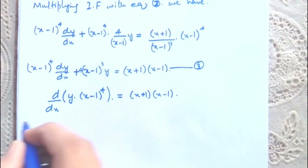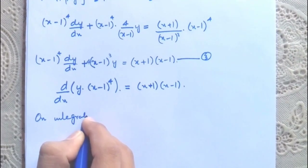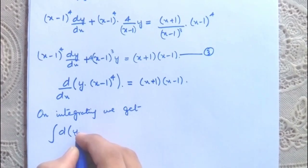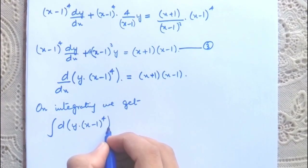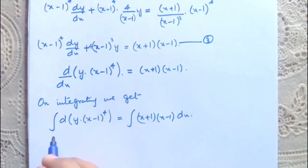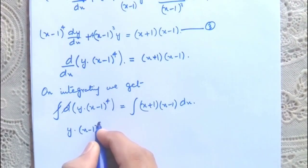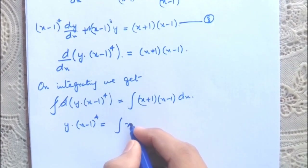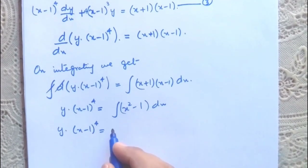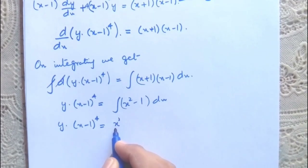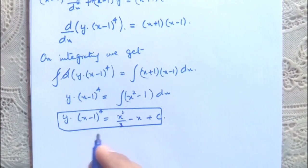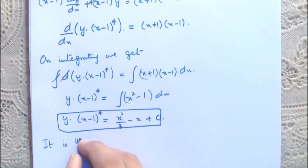So we write d/dx[y · (x-1)⁴] = (x+1)(x-1) = x²-1. On integrating both sides, y · (x-1)⁴ = ∫(x²-1)dx = x³/3 - x + C. This is the required general solution.